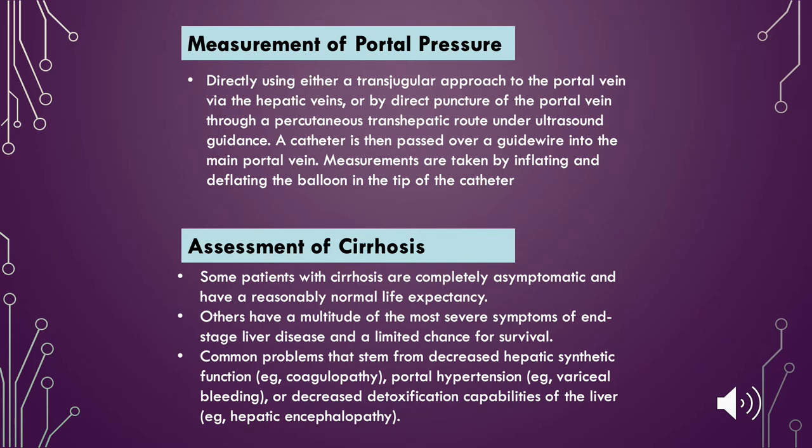Some patients with cirrhosis are completely asymptomatic and have a reasonably normal life expectancy. Others have a multitude of the most severe symptoms of end-stage liver disease and a limited chance for survival. Common problems stem from decreased hepatic synthetic function — for example, coagulopathy; portal hypertension — for example, variceal bleeding; or decreased detoxification capabilities of the liver — for example, encephalopathy.